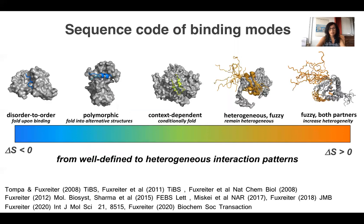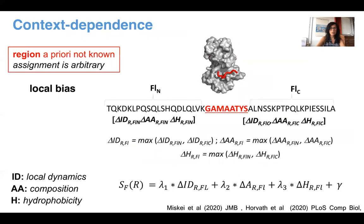There is considerable knowledge on these different binding modes and also the sequence codes that have been accumulated independently of the condensate field — this initiative was started before the recognition of the molecular mechanisms of condensates. We have thousands of protein complexes characterized along the spectrum of entropy change upon binding, from negative to positive, and also the interaction patterns from well-defined to more heterogeneous. So if we want to compute this, what we need to do is compute context dependence — basically determine whether there is a bias in a sequence that would bring the sequence towards ordered or disordered interaction. What we need to do is examine possible interaction motifs and compare to their flanking sequences to see if there is a bias.